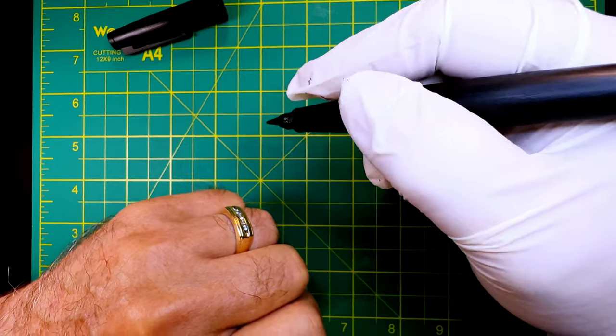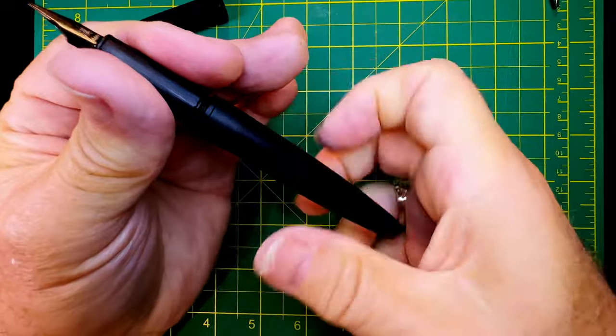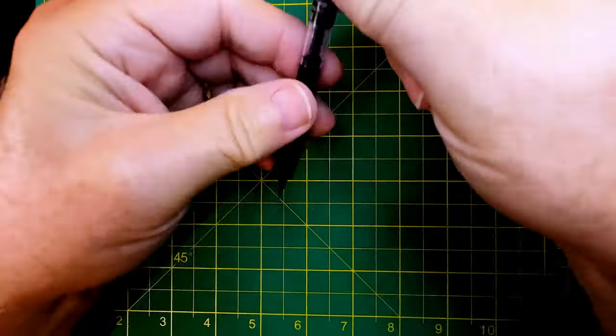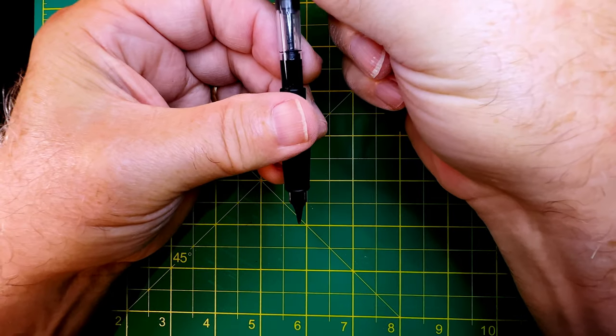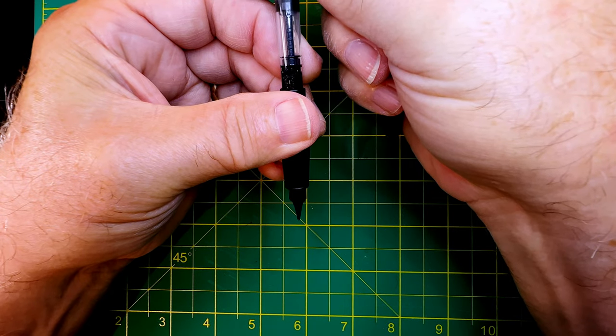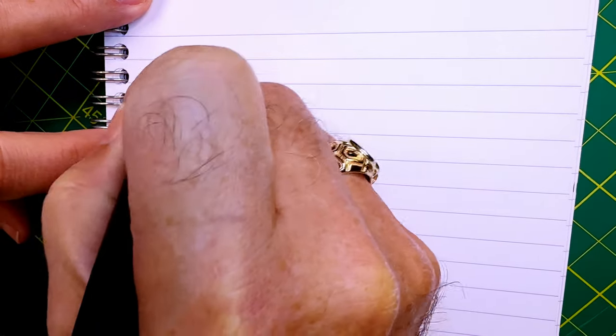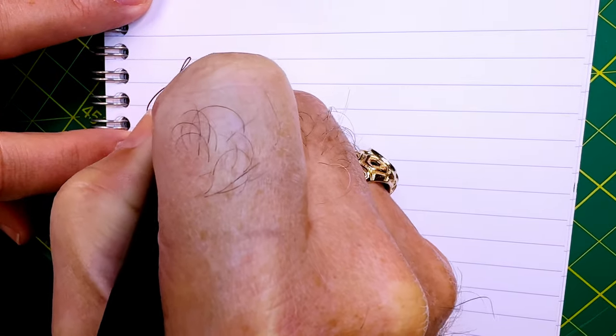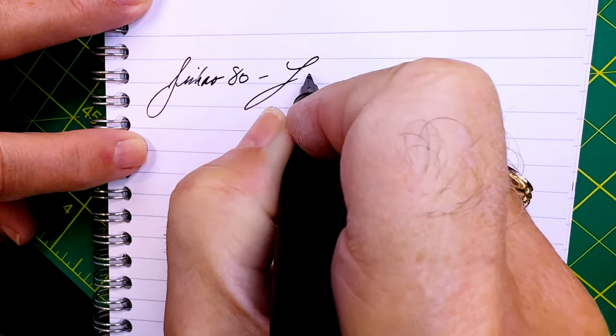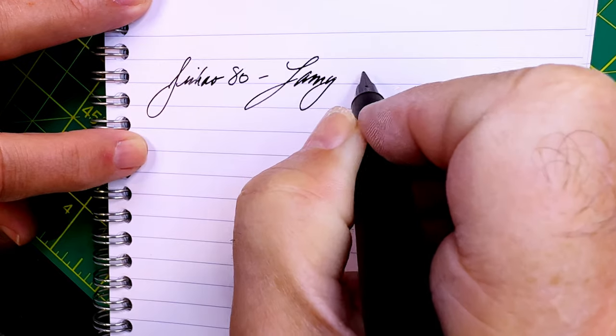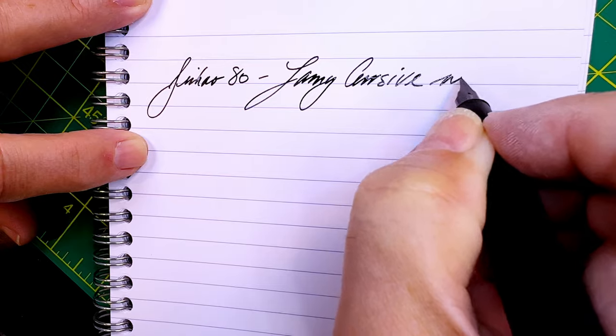For that ink to run down inside there, or I could give it a little bit of a push here by pushing that converter down slightly to get some ink flowing. Okay, so this is the Jinhao 80 with a Lamy cursive nib.